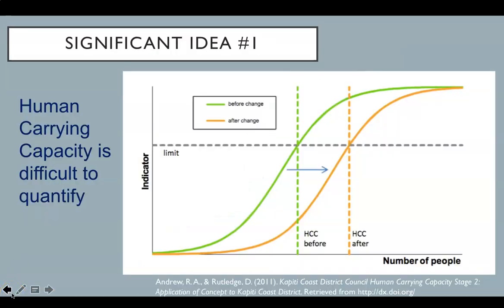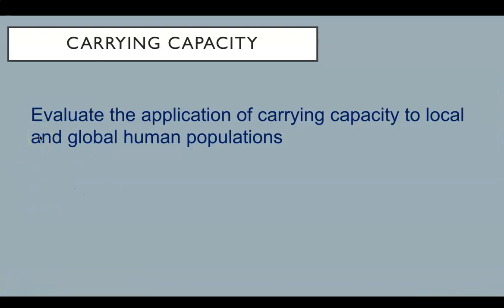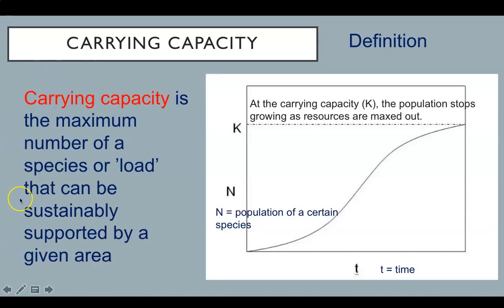Significant idea number one for this subtopic is that human carrying capacity is difficult to quantify. You need to be able to evaluate the application of carrying capacity to local and global human populations. Recall that the definition of carrying capacity is the maximum number of a species or load that can be sustainably supported by a given area.